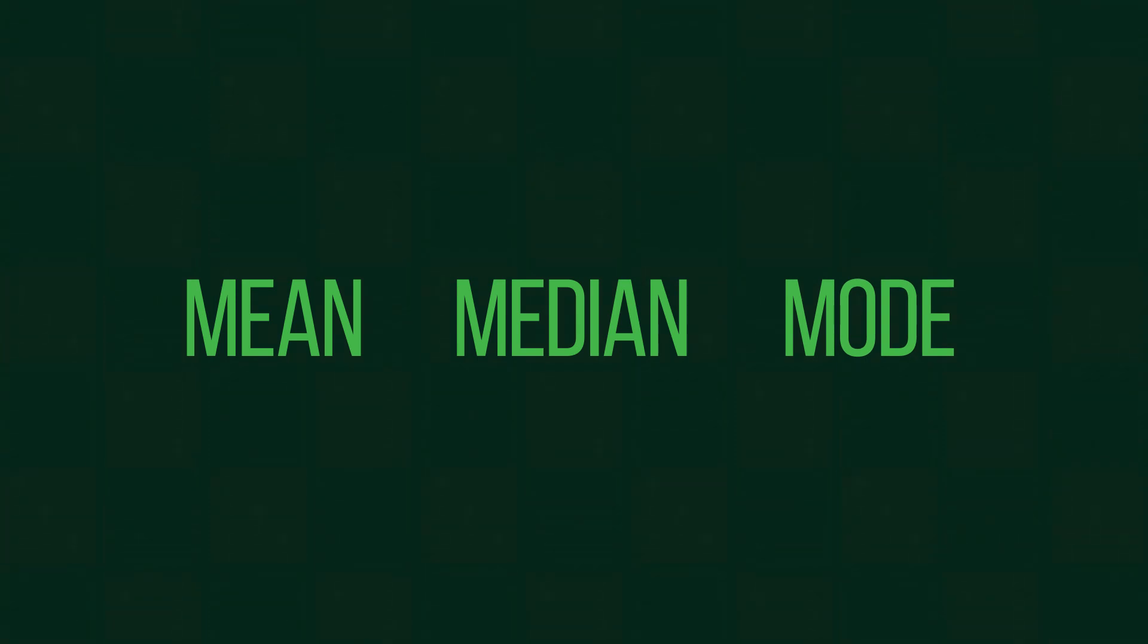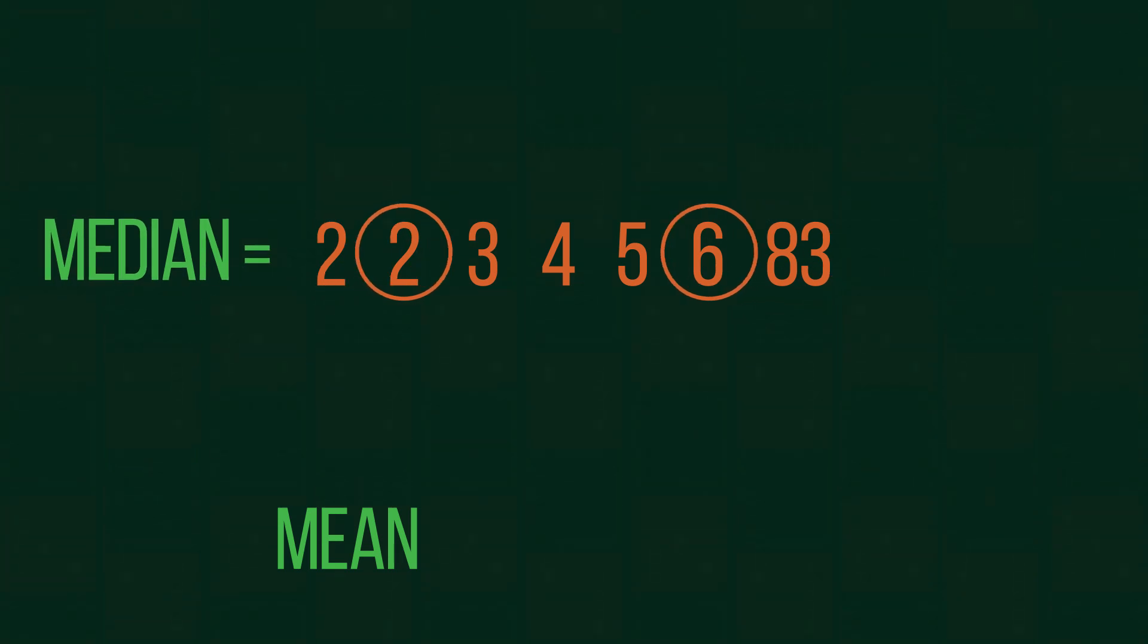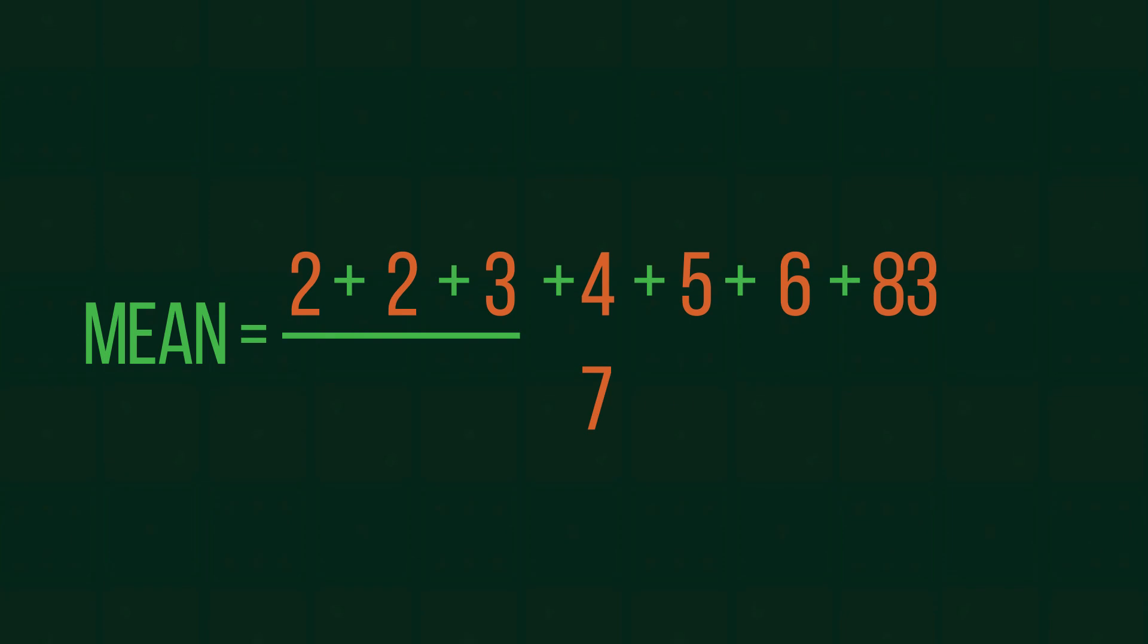As you know, there are three most common types of average: mean, median, and mode. Can you tell what the median and mean are for this set of data? Pause the video while you work it out. The median or middle value in this case is 4. The mean, which we found by adding them all and dividing by the number of values, is 15.